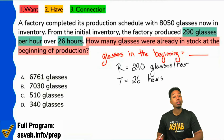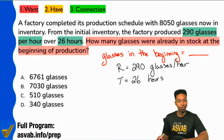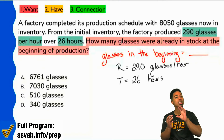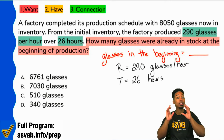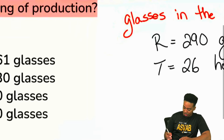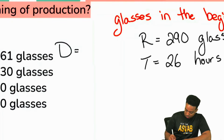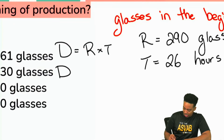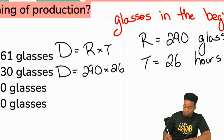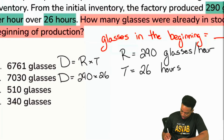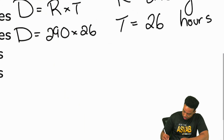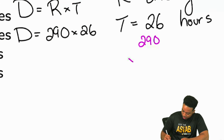So 290 glasses per hour — that's the rate. And the time period was 26 hours. Now let's pretend we want to find the distance. I'm going to plug it in: 290 per hour times 26. You have to understand what the numbers mean. When we perform this — let me zoom in to make it a little easier — we have 290 times 26.